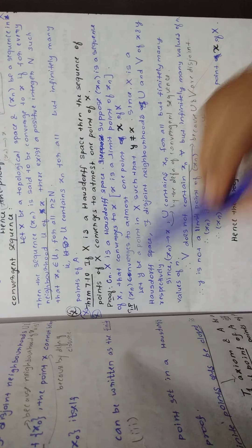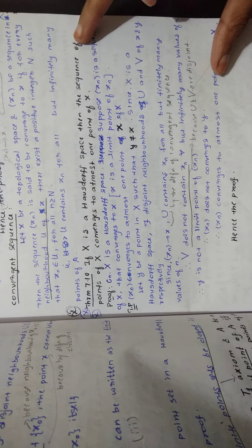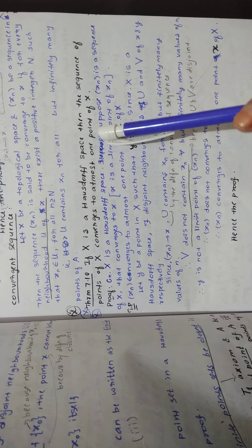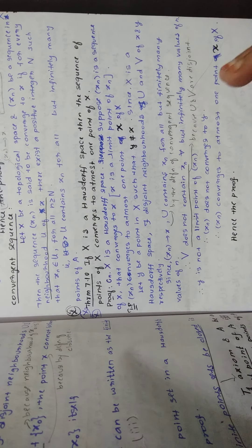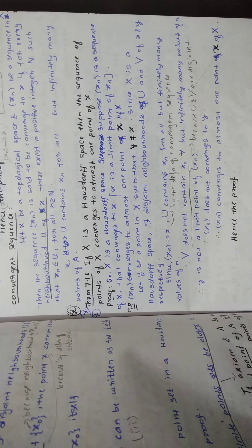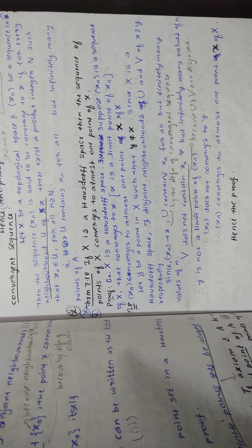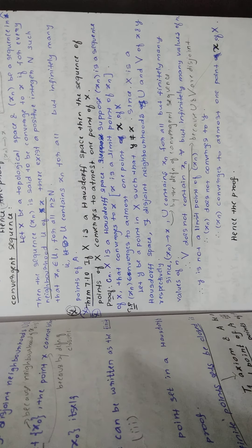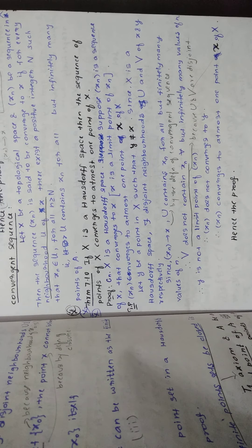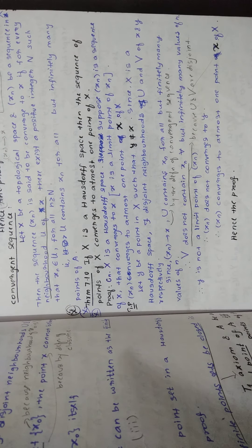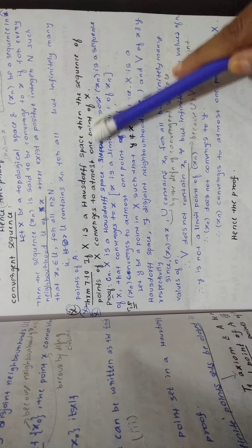I will be explaining Theorem 7.10 in this video. Here you can see the statement. If X is a Hausdorff space — a Hausdorff space means there will be two distinct points, and for those two different points there will be neighborhoods that are disjoint. That is the Hausdorff space definition. So they are saying this X is a Hausdorff space.